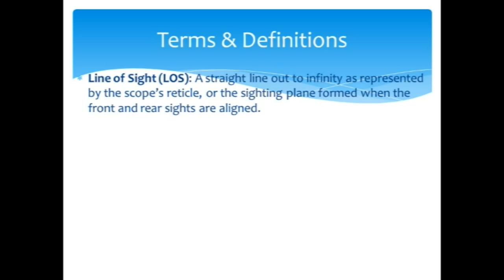First thing we need to do is go through some of the terms and definitions to help you understand what we're talking about. First one being line of sight. A straight line out to infinity as represented by the scope's reticle, or the sight plane formed when the front and rear sights are aligned. That is where you're looking.